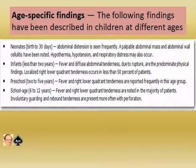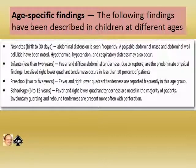Some of the age-specific findings — just like we said about age-specific history — have been described in children at different ages. In neonates below 30 days, abdominal distension is seen frequently, along with palpable abdominal mass, abdominal wall cellulitis, hypothermia, hypotension, and respiratory distress.